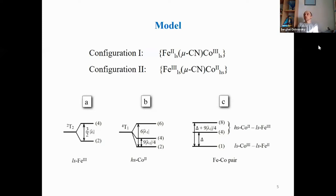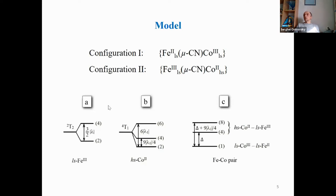For high-spin cobalt-2 the ground state is orbital triplet 4T1, and for low-spin iron-3 it is orbital triplet 2T2. Spin-orbit interaction splits both levels, and analysis of energy gaps demonstrates that up to room temperature, population of the excited quartet for iron-3 and excited sextet for cobalt-2 can be neglected. Therefore, only these low-lying configurations are taken into account in our analysis.